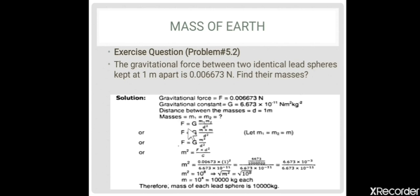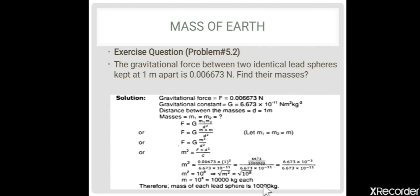We will use the law of gravitation. Since M1 = M and M2 = M, we get M × M = M². Isolating M², we get: M² = F × D² / G. Substituting the given values and simplifying, we get M² = 10⁴ kg², which gives M = 10,000 kg each. Therefore, the mass of each identical lead sphere is 10,000 kg.